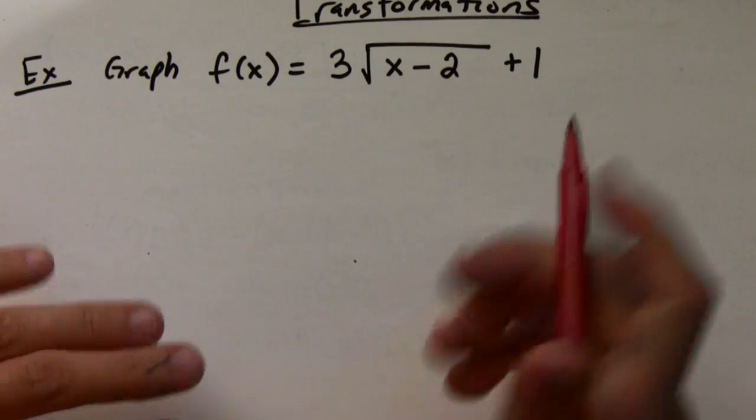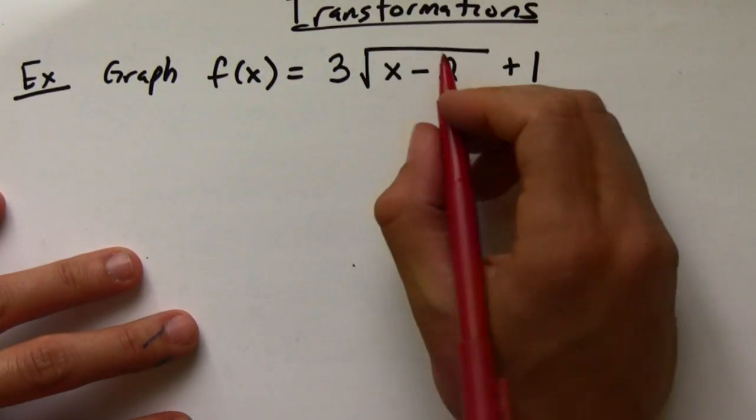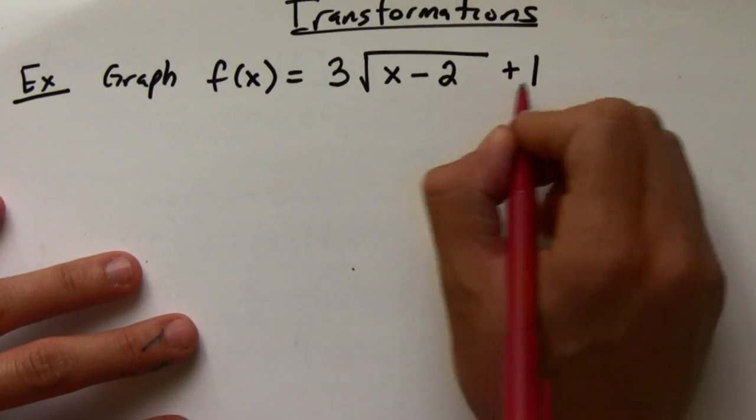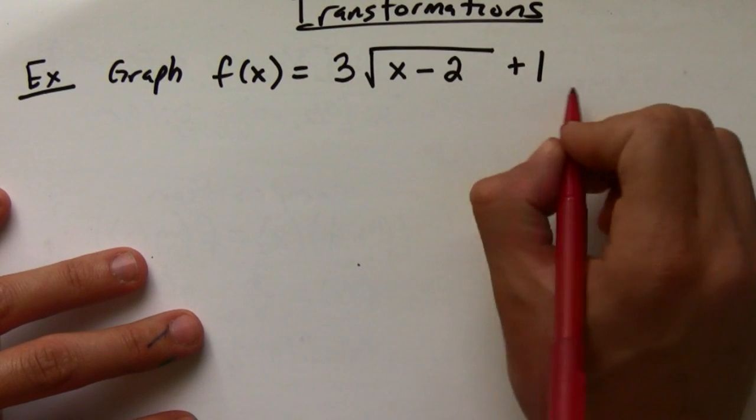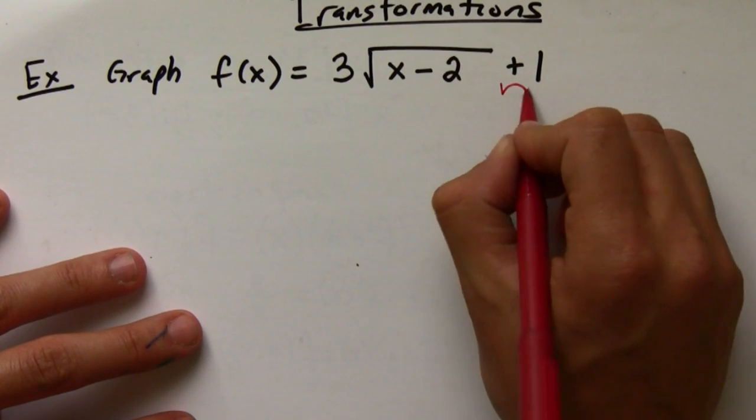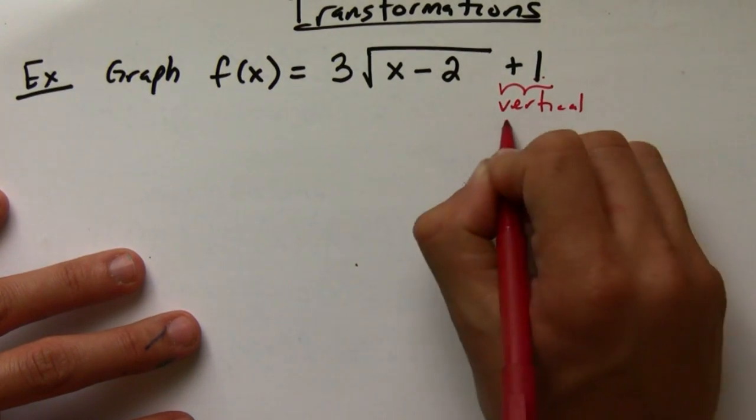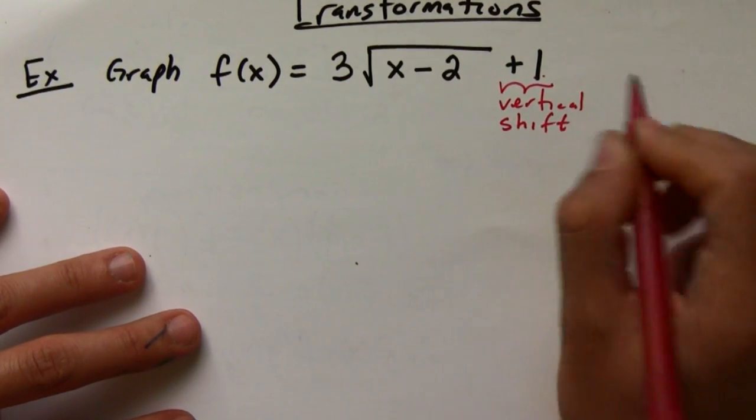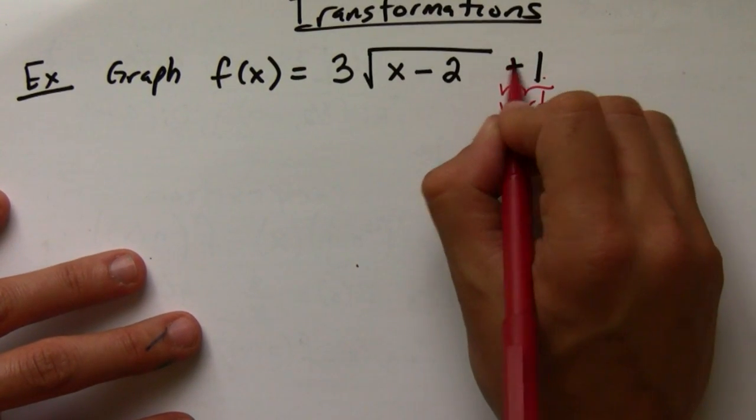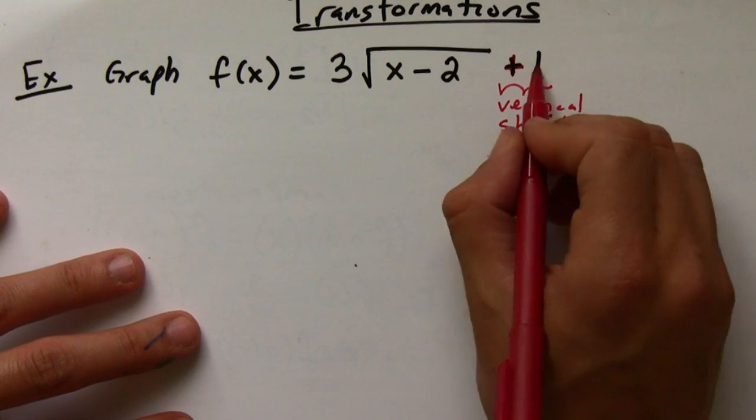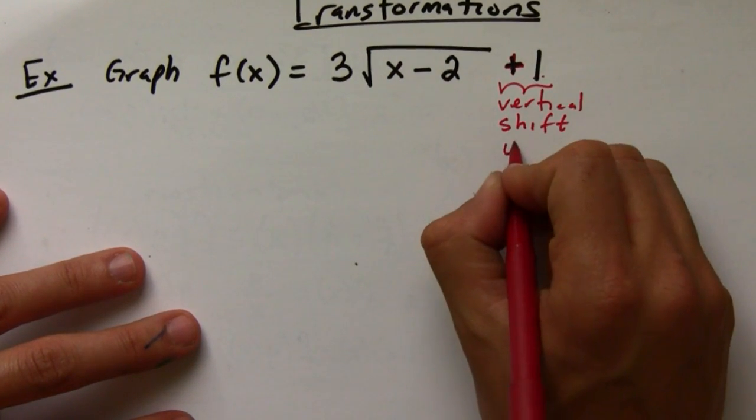First off, remember that if you're adding or subtracting to the entire function, like this plus one, this is going to be a vertical shift. Vertical shifts are exactly what it looks like, so here it's going to add one. That means I'm going to go in the positive direction one vertically.